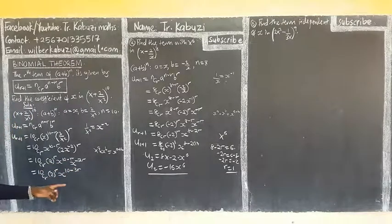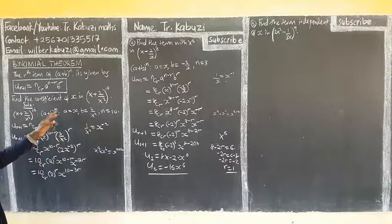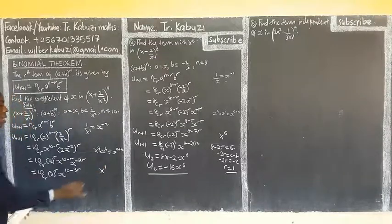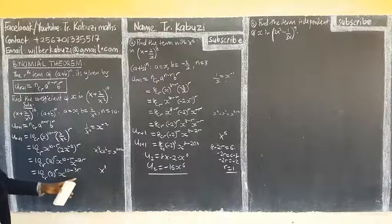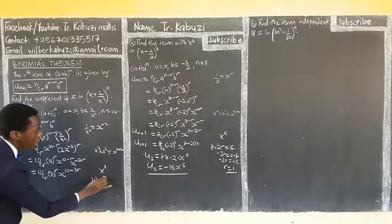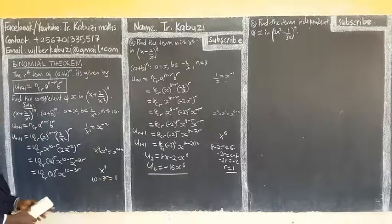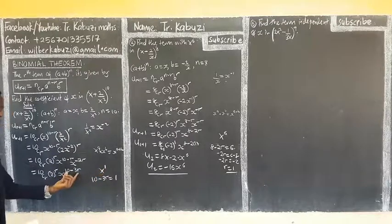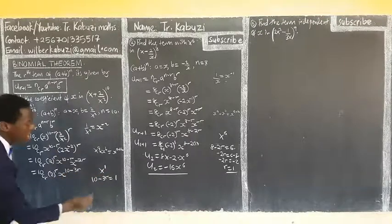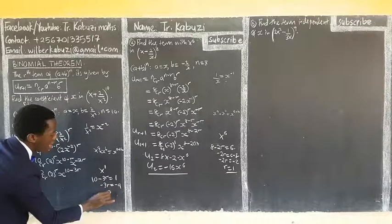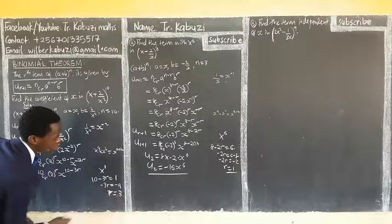Now we have the overall power of x as (10 - 3r). Since we want the coefficient of x, meaning x^1, we set 10 - 3r = 1, giving -3r = -9, so r = 3.